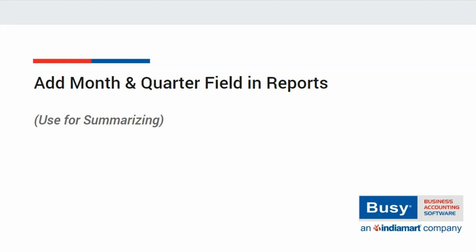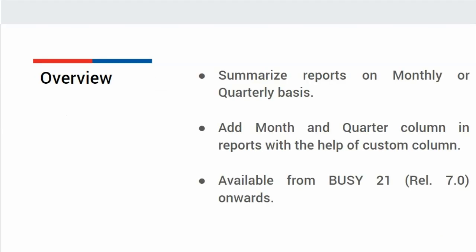Add month or quarter field in reports. From Busy 21 Release 7.0 onwards, you can summarize reports on a monthly or quarterly basis by adding a month or quarter column in the report using the custom column option.